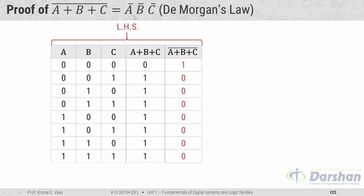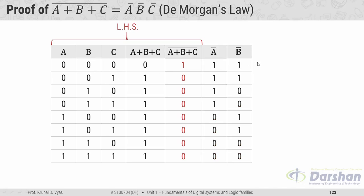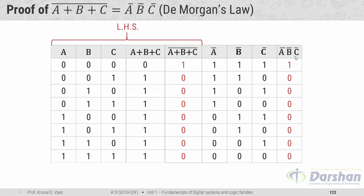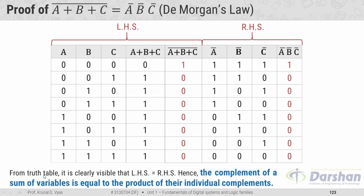For the RHS, we first construct A-bar, B-bar, and C-bar by complementing each input column. Then A-bar AND B-bar AND C-bar is 1 only when all individual complements are 1 — that is, only when all original inputs are 0, and 0 otherwise. Comparing LHS and RHS in the truth table, they are clearly equal, proving that the complement of a sum of variables equals the product of the individual complements. This is the statement of De Morgan's first theorem.